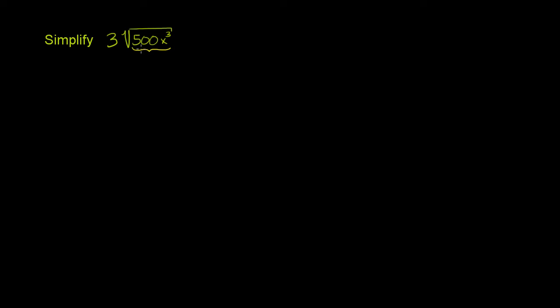Let's think about how to break down 500x to the third into perfect squares and things that aren't perfect squares. 500 is not a perfect square, and x to the third is not a perfect square right from the get-go. When in doubt, we can just start to prime factorize, and maybe we'll discover some perfect squares. So 500 is divisible by 5, and it's 5 times 100. You probably already recognize that 100 is a perfect square.